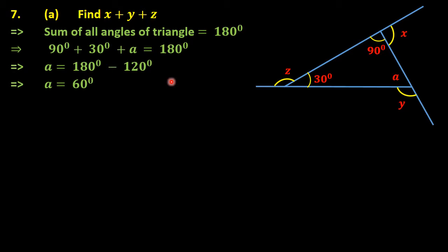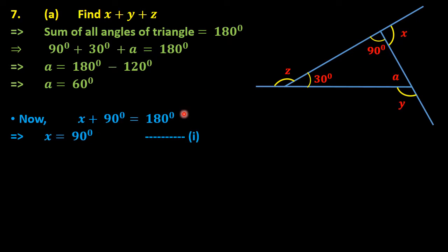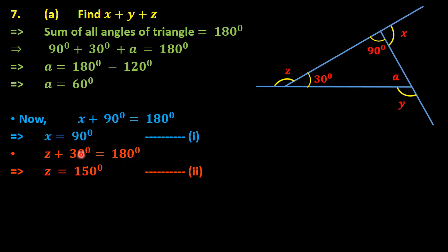After subtracting, a equals 60 degrees. Now we use the linear pair property to find x, y, and z. The angle 90 degrees and x form a linear pair, so x equals 180 minus 90, which is 90 degrees — equation one. Similarly, z and 30 degrees form a linear pair, so z equals 180 minus 30, which is 150 degrees — equation two.